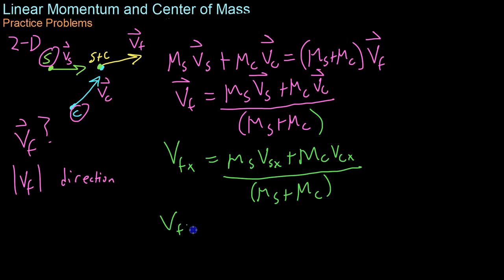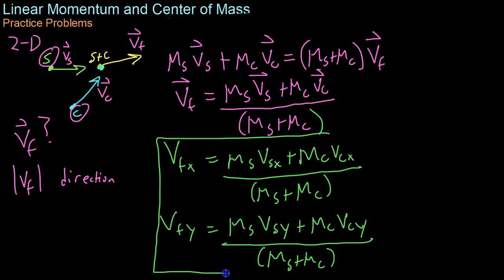And then you do the same thing in the y direction. So the final y velocity will be the initial y velocities of the S and y particles times their respective masses and divided by the total mass of the system afterwards. So here you have the two components of this Vf vector. And from here it would be very easy to visualize. You have your Vfx and your Vfy making up the components of this vector.